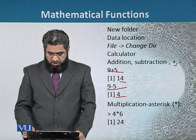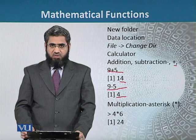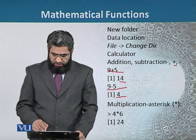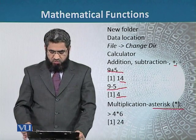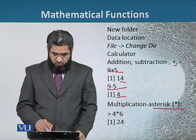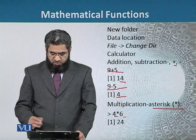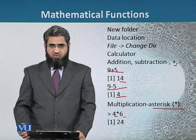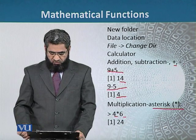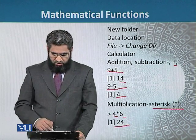Similarly, we can use the multiplication option by using the operator asterisk. If we use two numbers, 4 and 6, with the asterisk in between, it means we are going to multiply 4 with 6 and the answer will be 24.